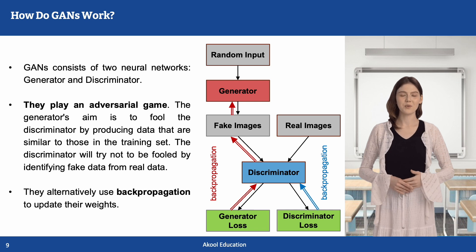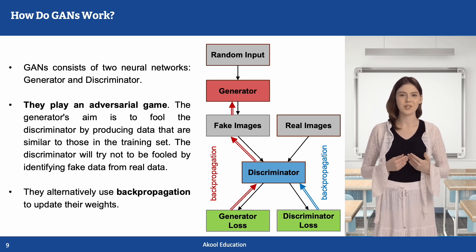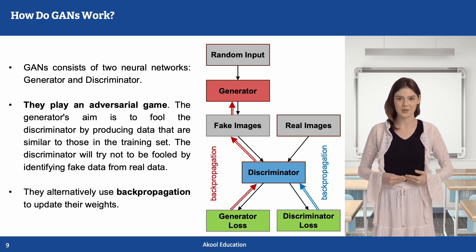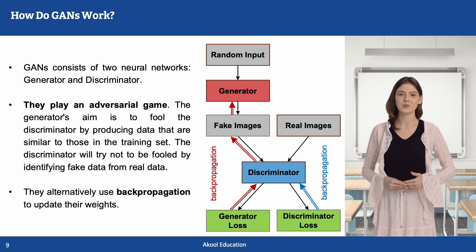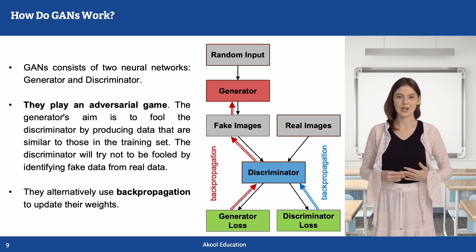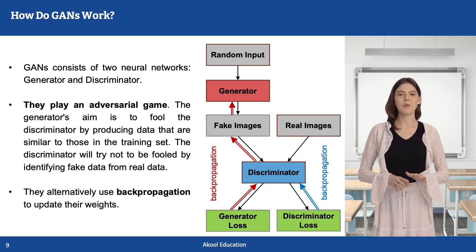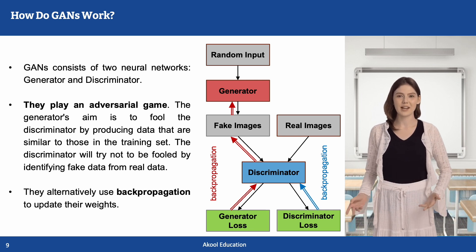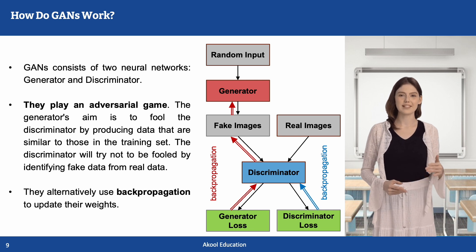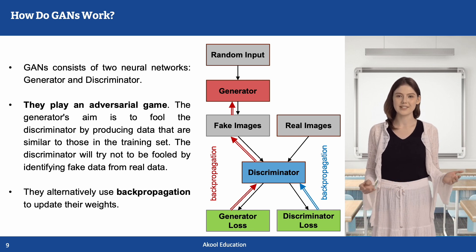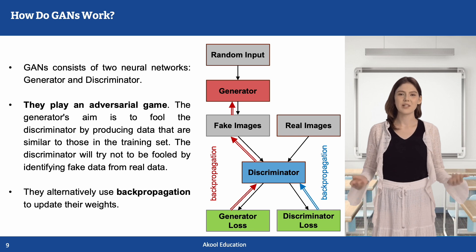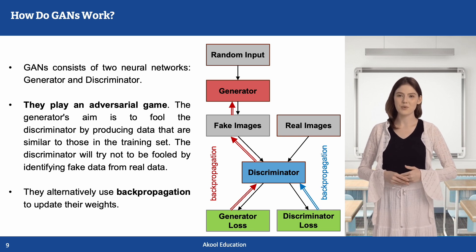GANs work through adversarial learning, where the generator and discriminator compete in a minimax game. The generator tries to create samples that fool the discriminator, while the discriminator improves its classification ability to differentiate between real and fake. Both networks update their weights through backpropagation. This iterative process leads to the generator producing high-quality synthetic data, making GANs incredibly powerful.